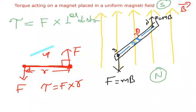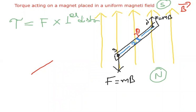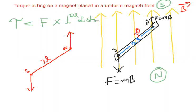Coming back to our diagram: the magnet has south pole and north pole. One force acts upward at north pole and one acts downward at south pole. The magnetic length 2L goes from south to north, but 2L is not perpendicular to the force directions. According to the torque formula for a couple, we need the perpendicular distance, but 2L is not that perpendicular distance.